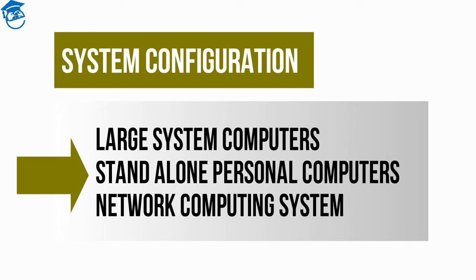Dumb terminals are not capable of processing data on their own — they serve only as input or output terminals, that's why they are called dumb. Over time these systems have become more efficient and sophisticated. In many instances dumb terminals have given way to intelligent terminals, which allow data processing at the local level as well. This is all about large system computers. Then comes standalone personal computers — a standalone system is one which is not connected to or does not communicate with another computer system.